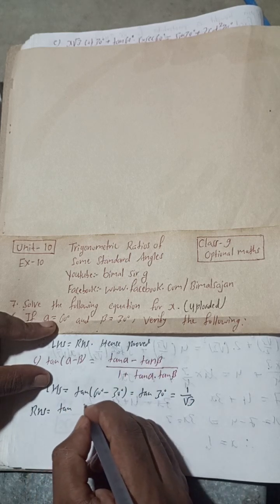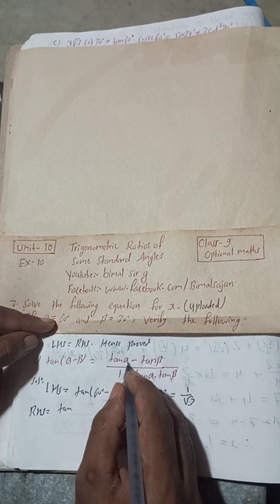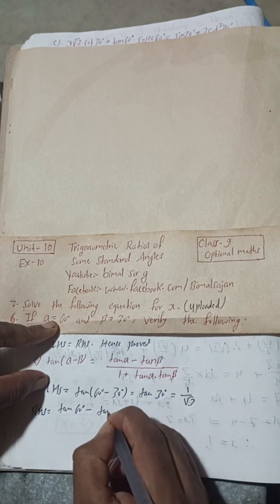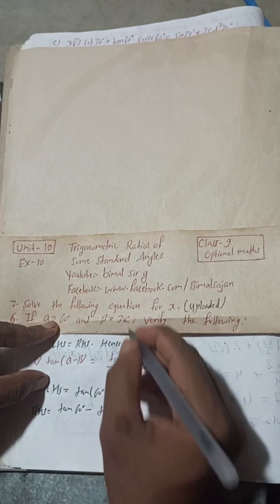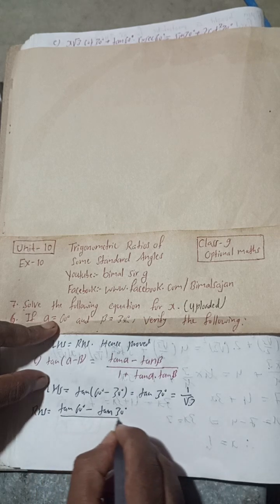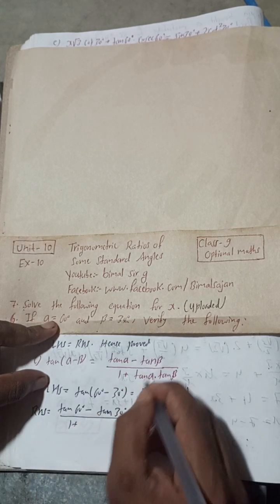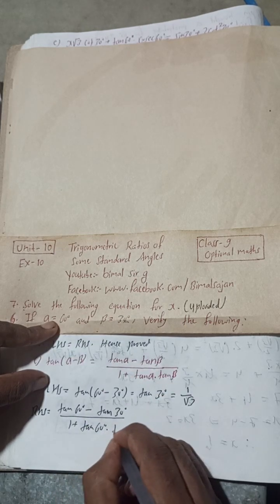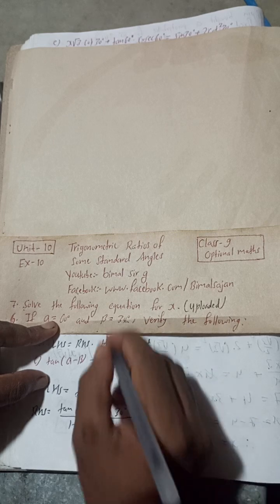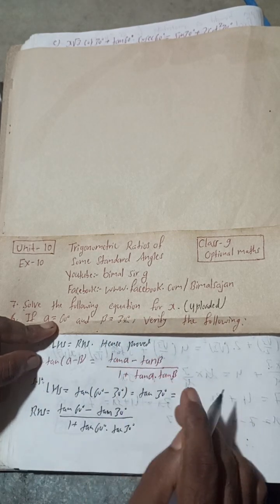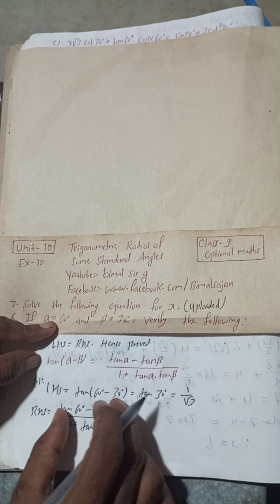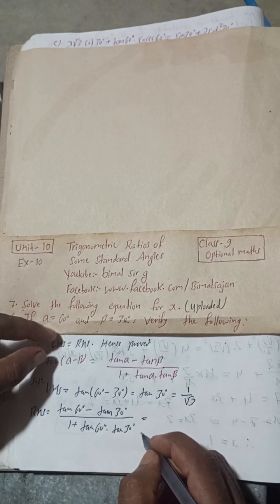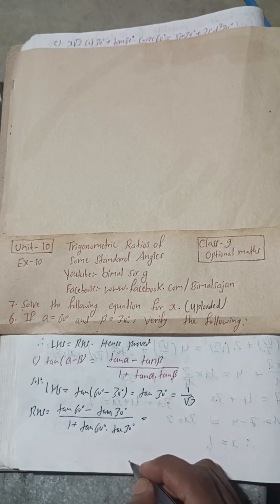Now for the RHS part: (tan α − tan β) / (1 + tan α · tan β). Substituting directly, tan alpha is tan 60°, minus tan beta which is tan 30°, divided by 1 plus tan 60° into tan 30°. You should write the RHS first and then put the alpha and beta values.